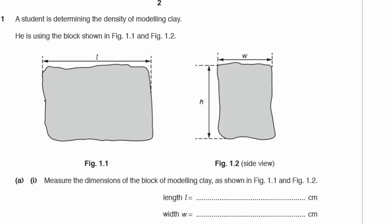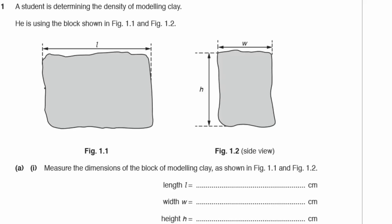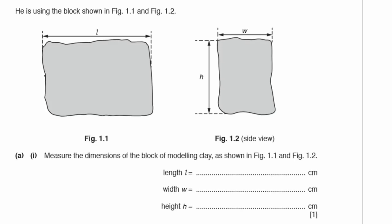Question 1. A student is determining the density of modelling clay, using the block shown in figures 1.1 and 1.2. Part A1: measure the dimensions of the block of modelling clay. We need the length, the width, and the height — physically taking a ruler and measuring it. I measured 5.5 centimetres, 2.8, and 3.6.